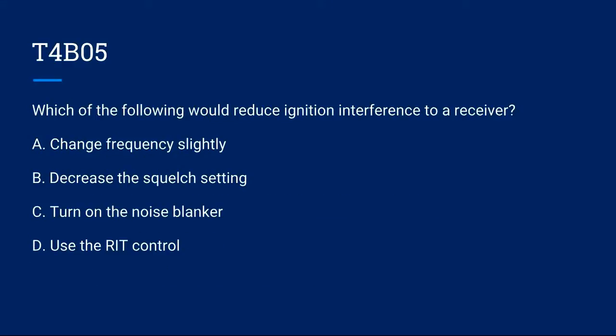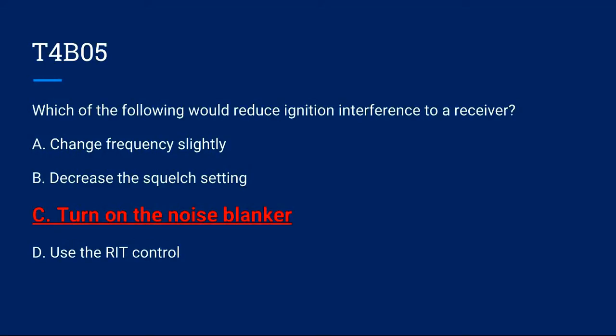T4B05: Which of the following would reduce ignition interference to a receiver? A. Change frequency slightly. B. Decrease the squelch setting. C. Turn on the noise blanker. Or D. Use the RIT control. The correct answer is C. Turn on the noise blanker.